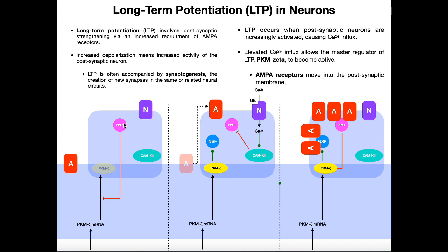Also at baseline, this protein PIN1 is active. PIN1's activity, when active, is to inhibit the translation of PKM-zeta mRNA into its protein form. If we have a PKM-zeta mRNA, translation would give us the protein PKM-zeta. But PIN1, when activated, inhibits that translation. So at baseline, we don't actually have the protein PKM-zeta. We have inactive calmodulin kinase 2, active PIN1, and no protein PKM-zeta because its translation is being inhibited by PIN1.